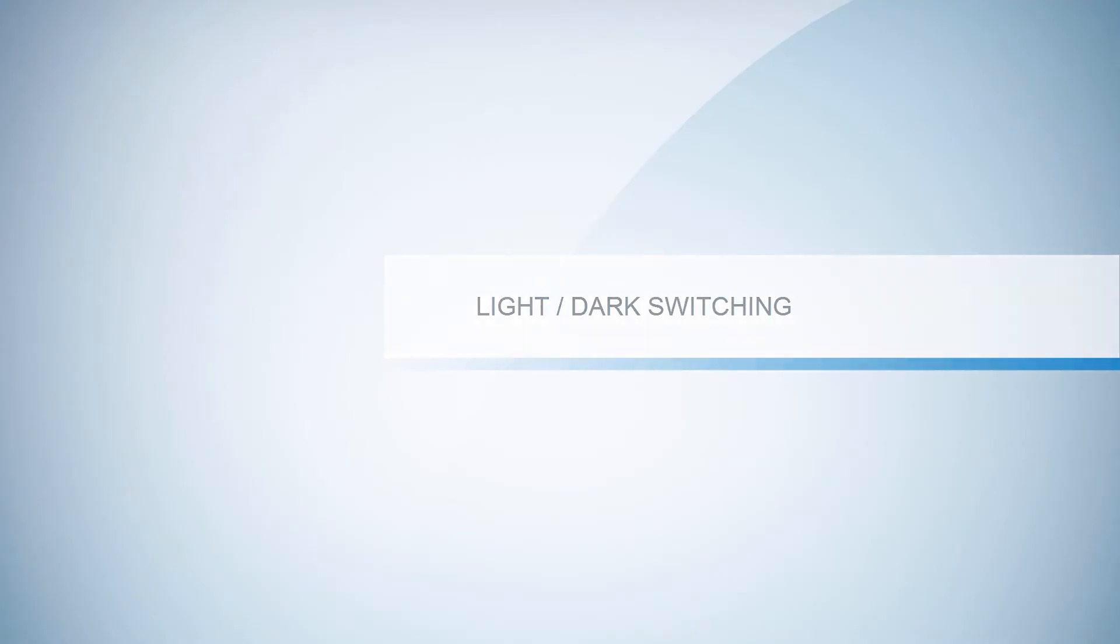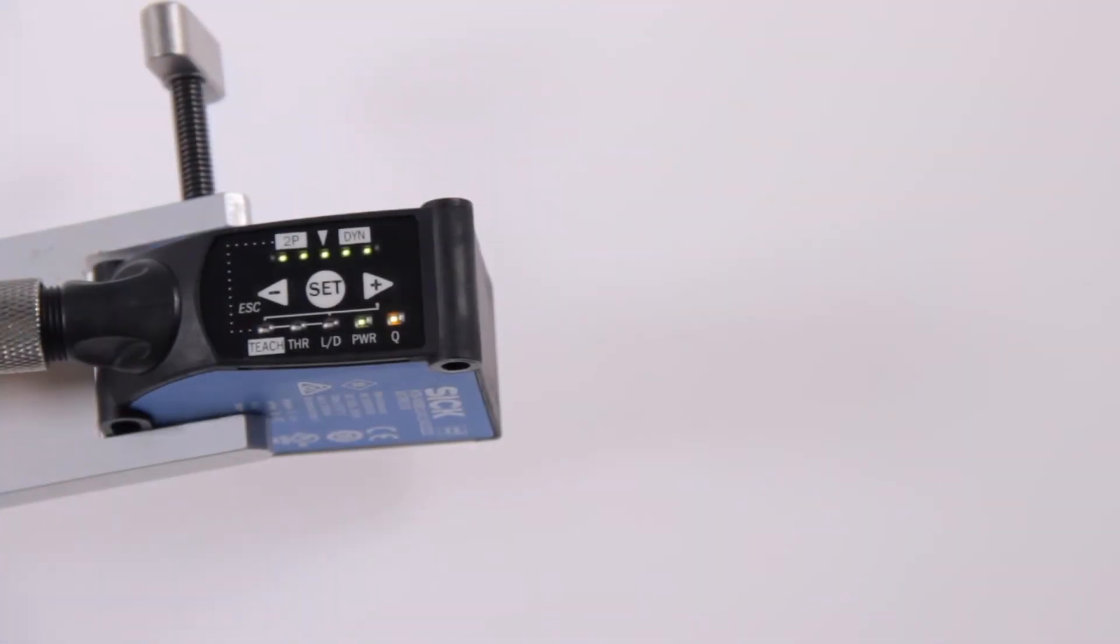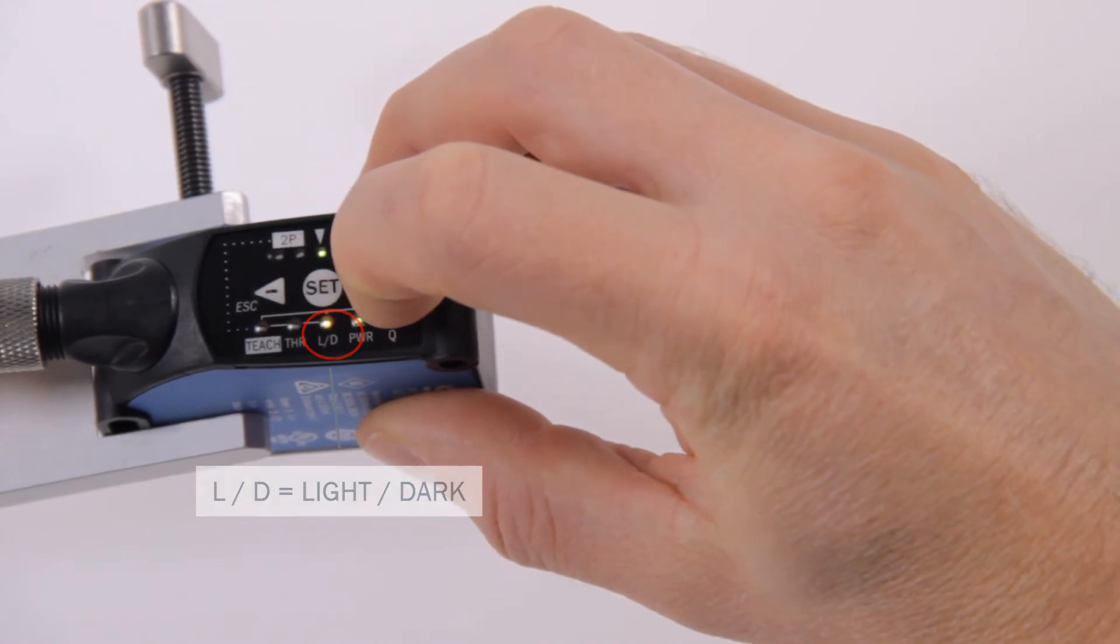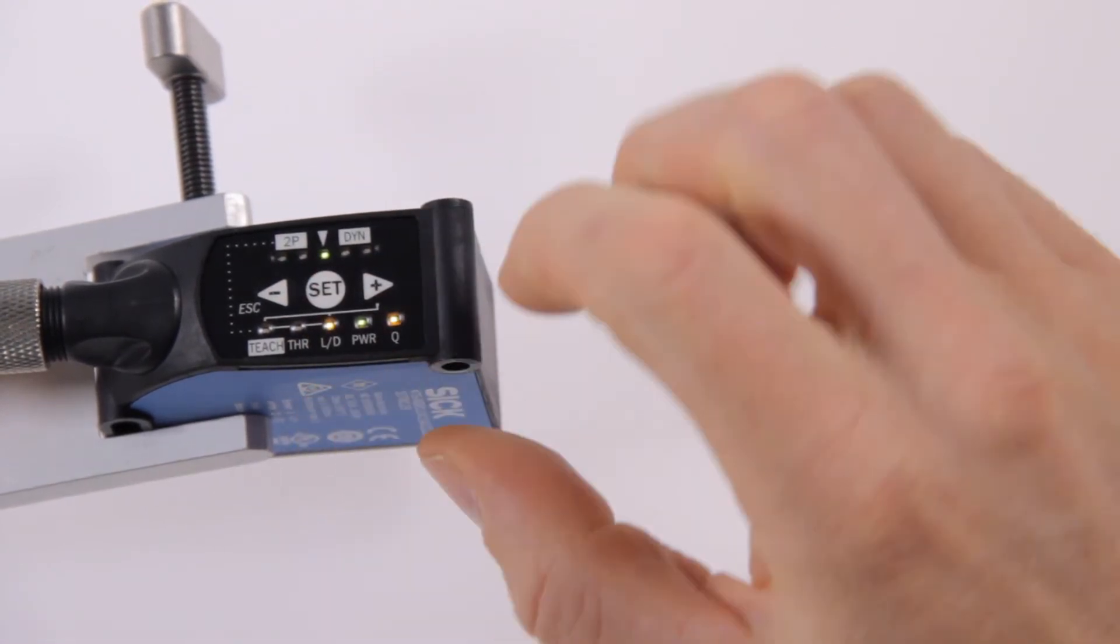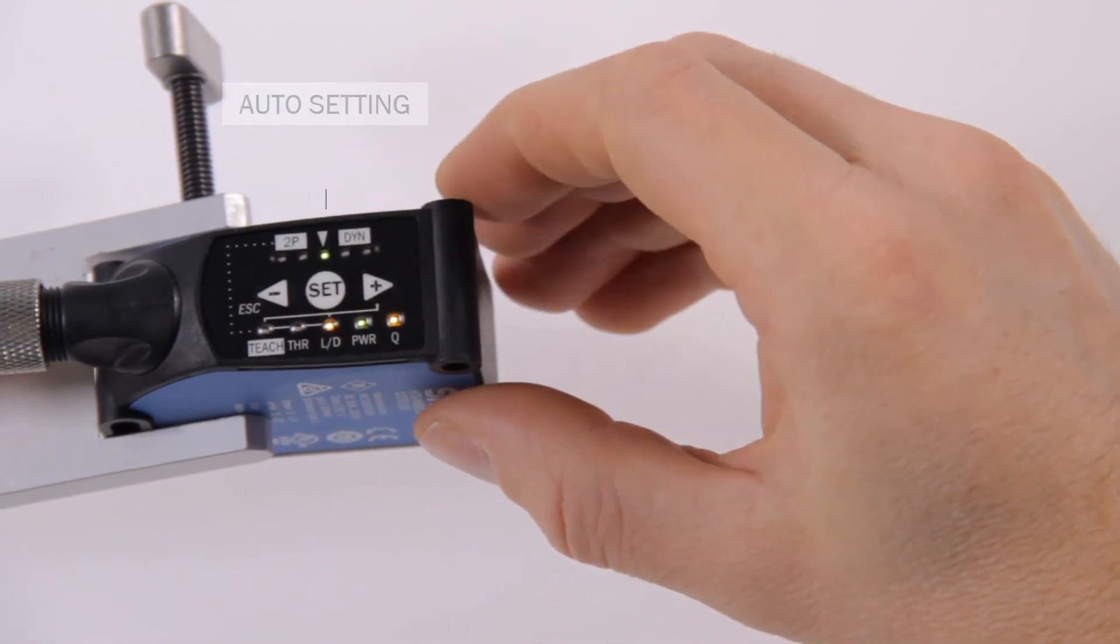Light dark switching. The light dark switching behavior or output logic of the sensor can be adjusted. Use the plus and minus buttons to get to the LD light dark menu item. Confirm with SET. The green LED below the arrow symbol is on.